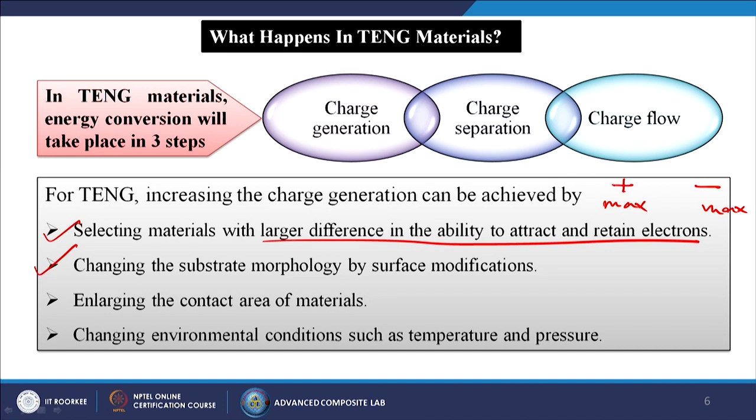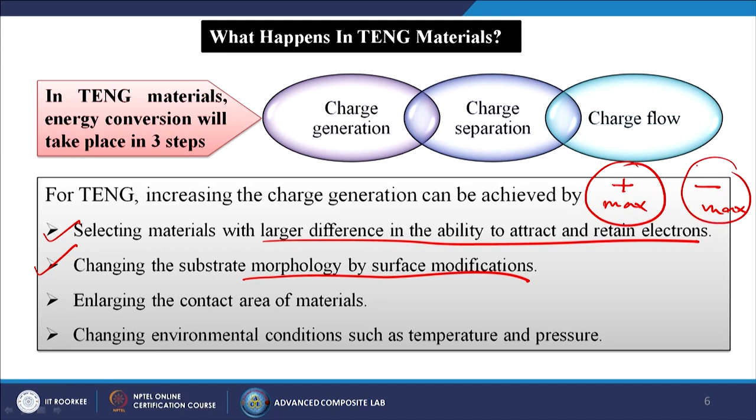The second method is changing the substrate morphology by surface modification. From a nanomaterials point of view, even if a material has positive or negative charge ions, from an application standpoint we need materials that can give more electricity. To get more electricity, whatever materials have more positive or negative ions, we can do certain coatings, wrappings, or dopings to increase the positivity or negativity of that material, to get a greater amount of electricity.